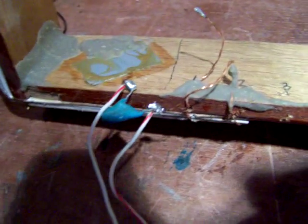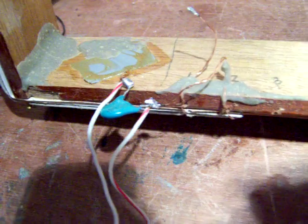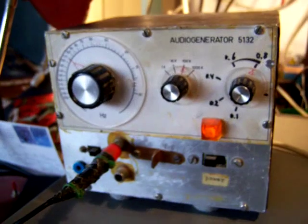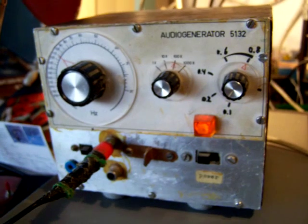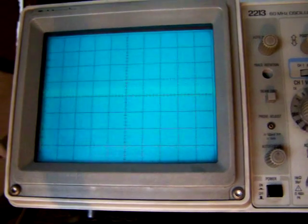I took a capacitor of 20 nanofarad over the coil, so when I turn the frequency on my sine wave generator you can see on the scope that there comes resonance at a certain point.